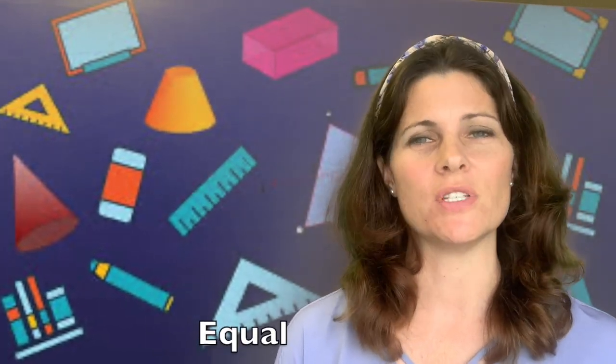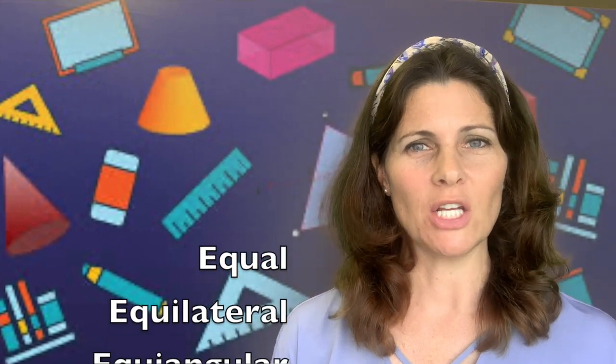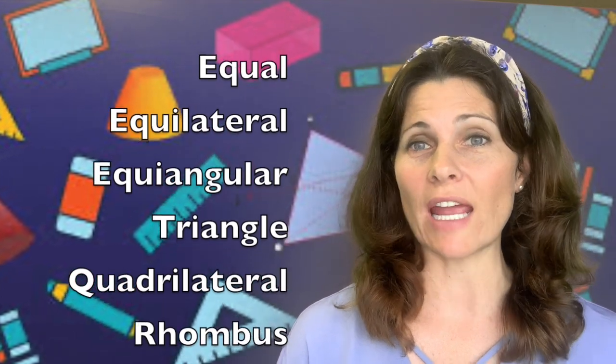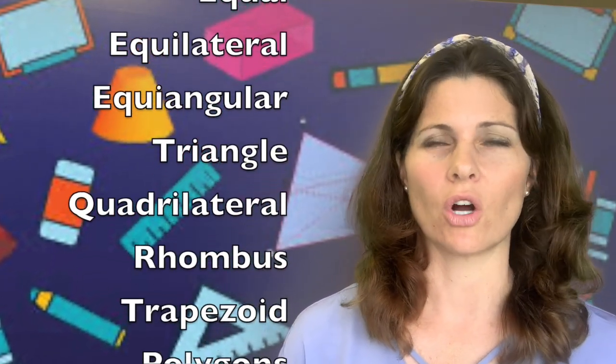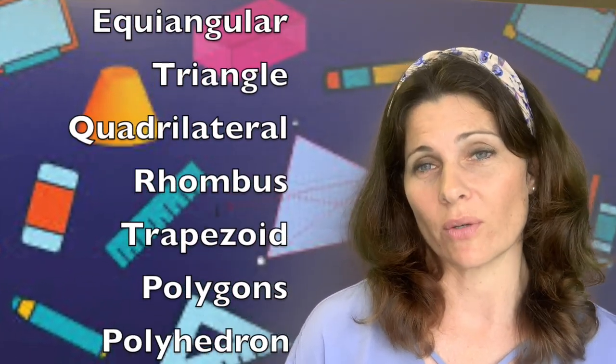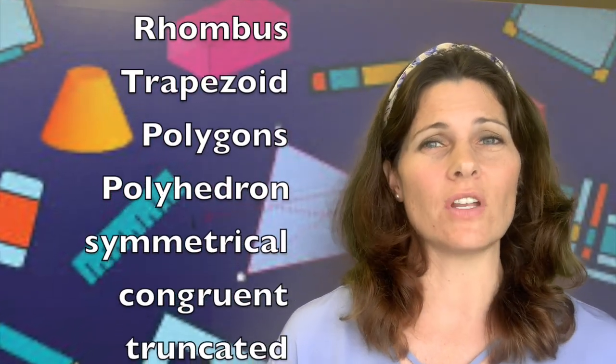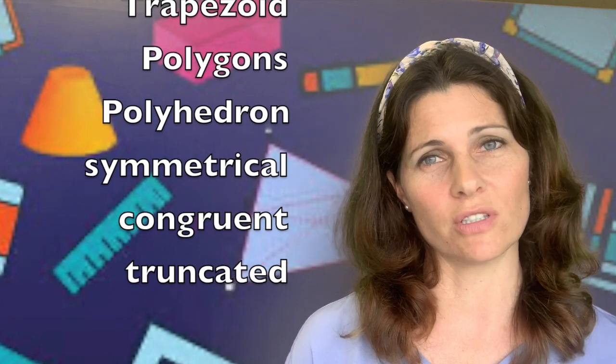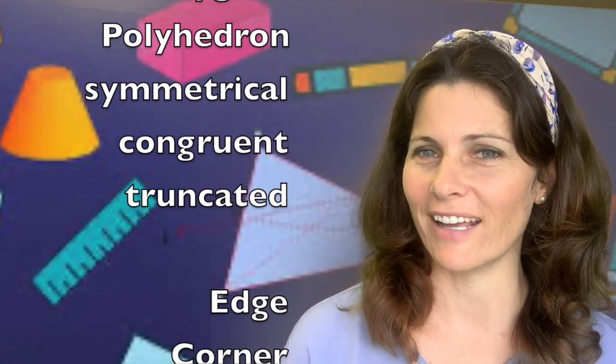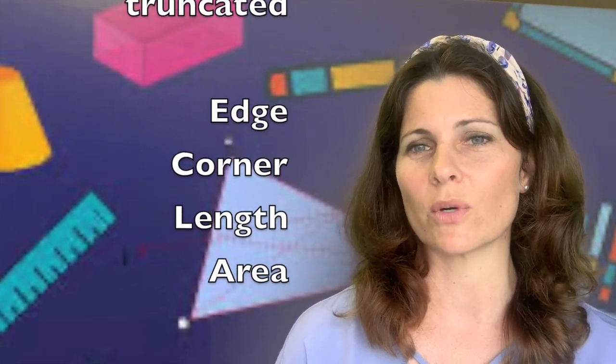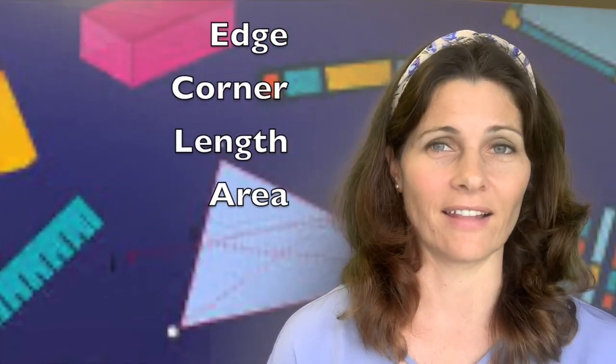We have used a lot of vocabulary in this lesson. We used equal, equilateral, equiangular, right? And that's all have to do with things that are equal. We used words that describe the shape like triangle, quadrilateral, trapezoid, right? All of these are different ways to call polygons. And we even use some adjectives like symmetrical, congruent, truncated. But even the most basic vocabulary can help us understand geometry, like using the words edge and corner and length.